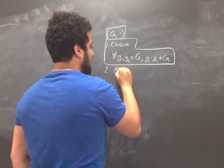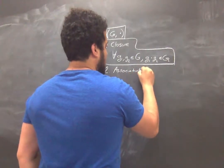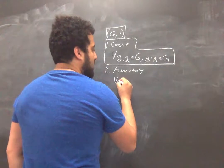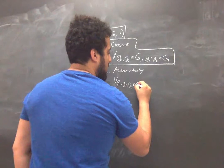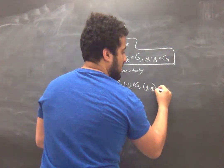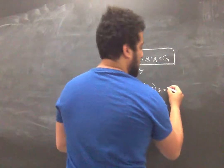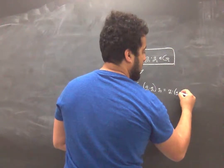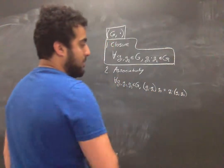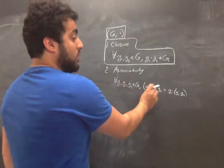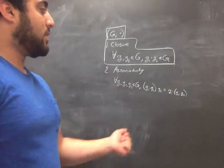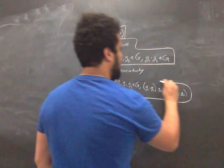Requirement number two is associativity. Associativity says that in a certain sense the order in which you combine elements doesn't matter, but it's a very specific sense. Formally, if you have three elements G1, G2, and G3 in the set G, then you can combine them as G1 times G2 times G3, and you could equally well have done G2 times G3 first and then multiply by G1 on the left. It's important that the actual order of the elements stays the same — G1, G2, G3 — so we're not allowed to switch things around. That would be commutativity. Associativity says that as long as the elements stay in the same order, we can combine them in whatever order we please to get the same final result.